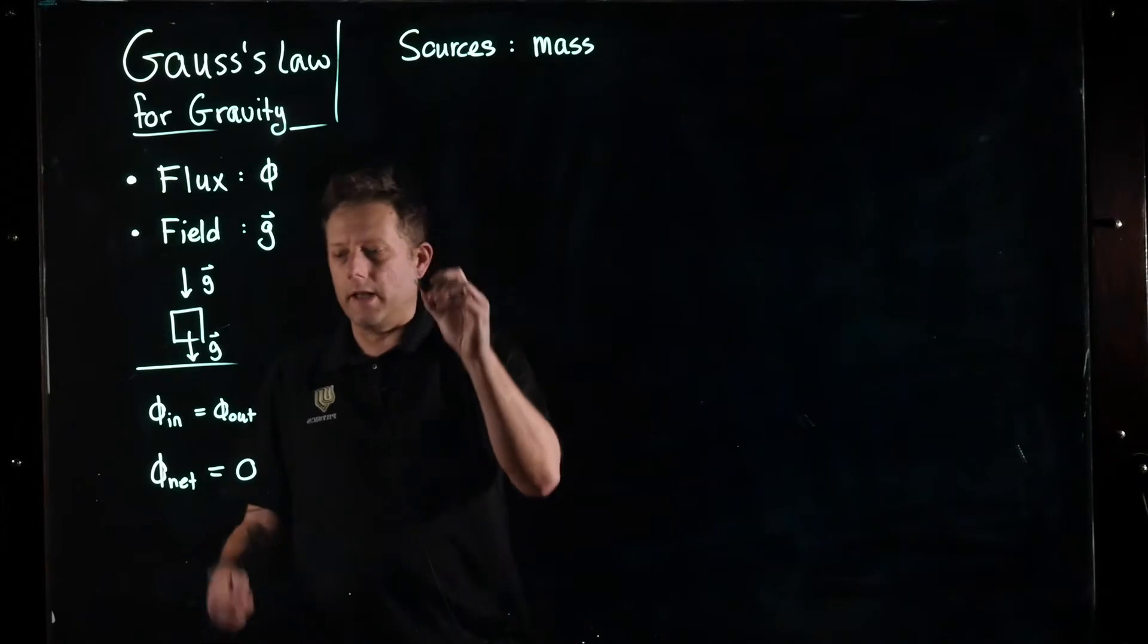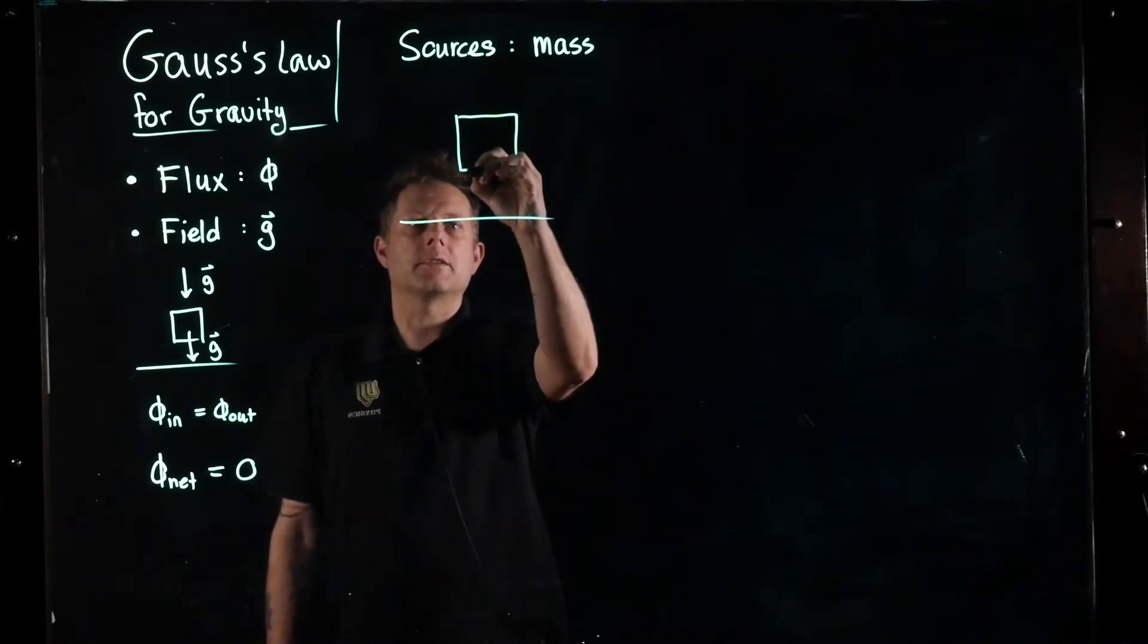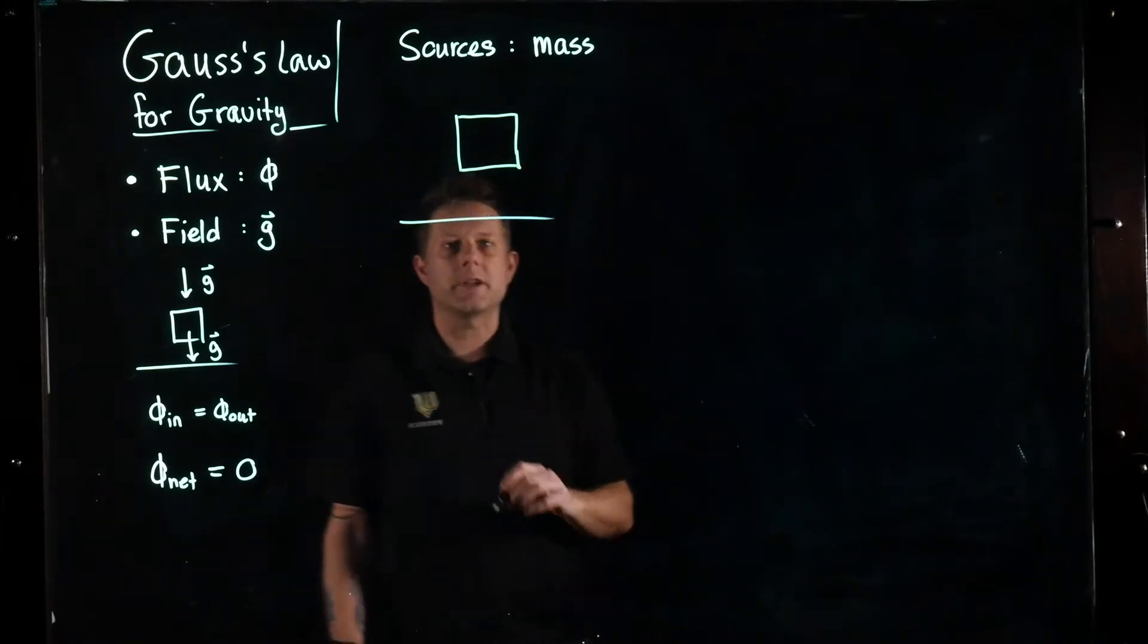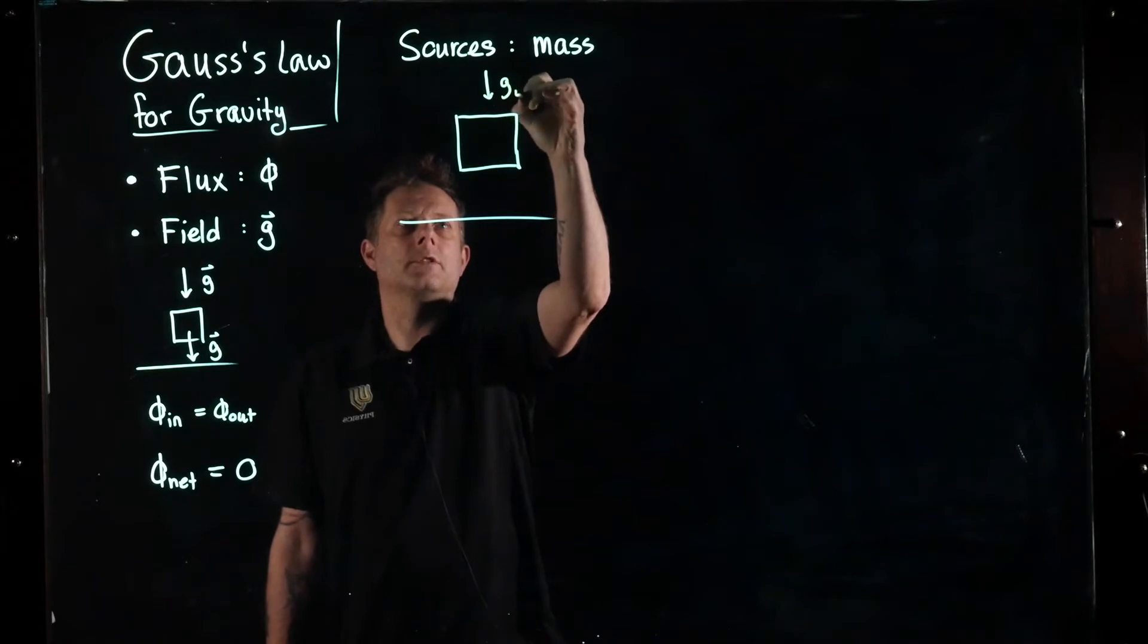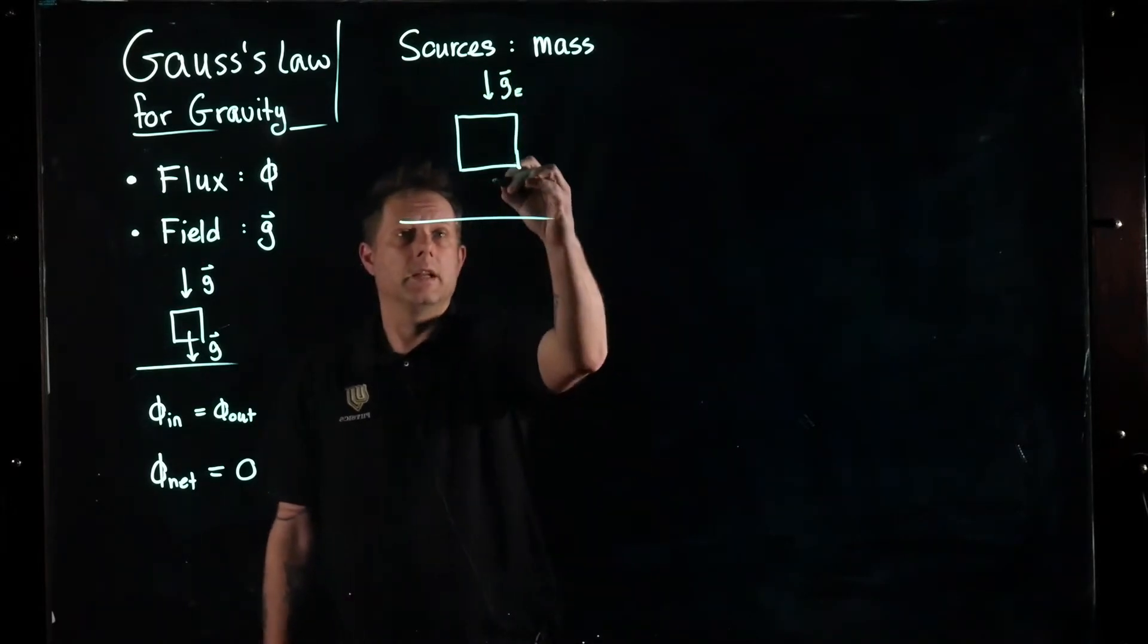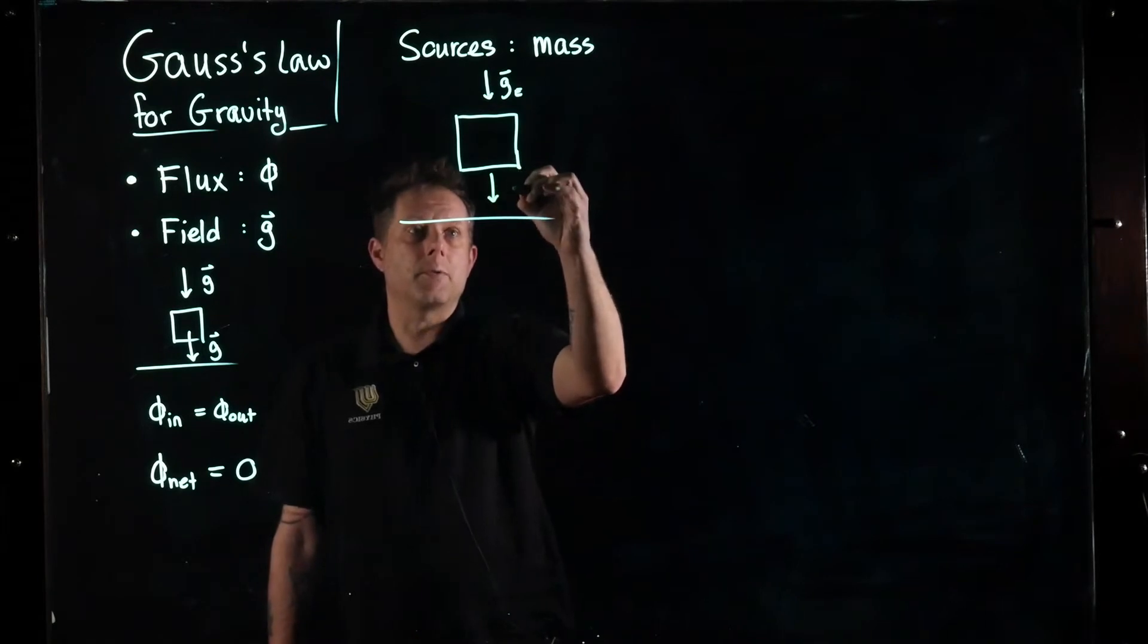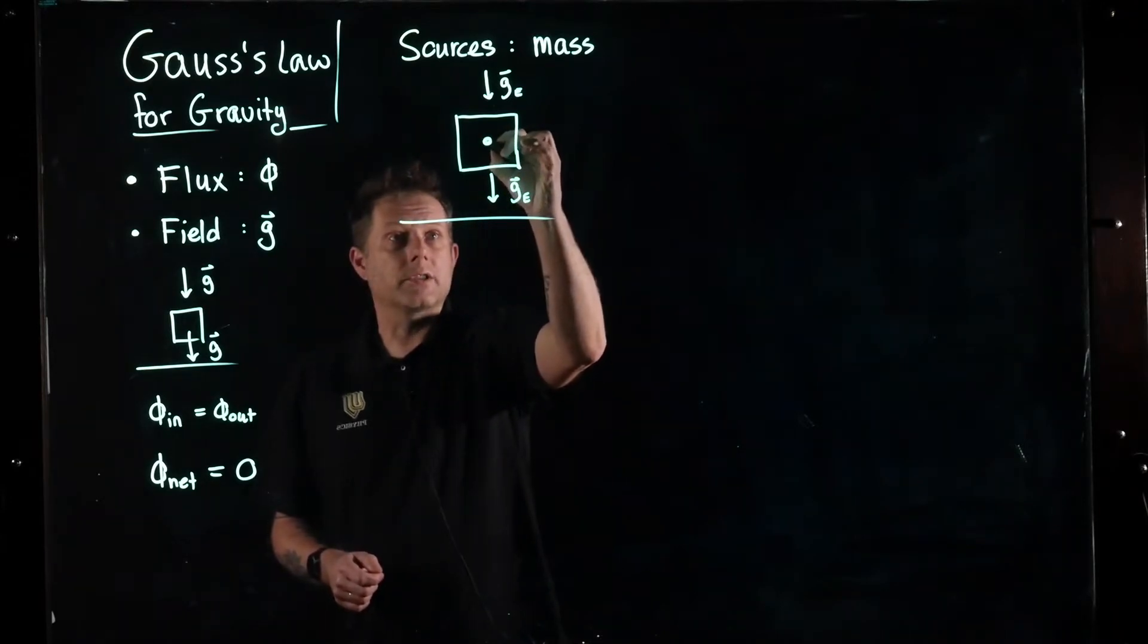Here we're going to again consider our box. I'm not going to draw it as three-dimensional, just two-dimensional. We have the gravitational field. I'm not going to put a subscript E to indicate this is the gravitational field due to the earth, and it's the same everywhere and pointing straight down. But now we're going to put in a little mass particle.